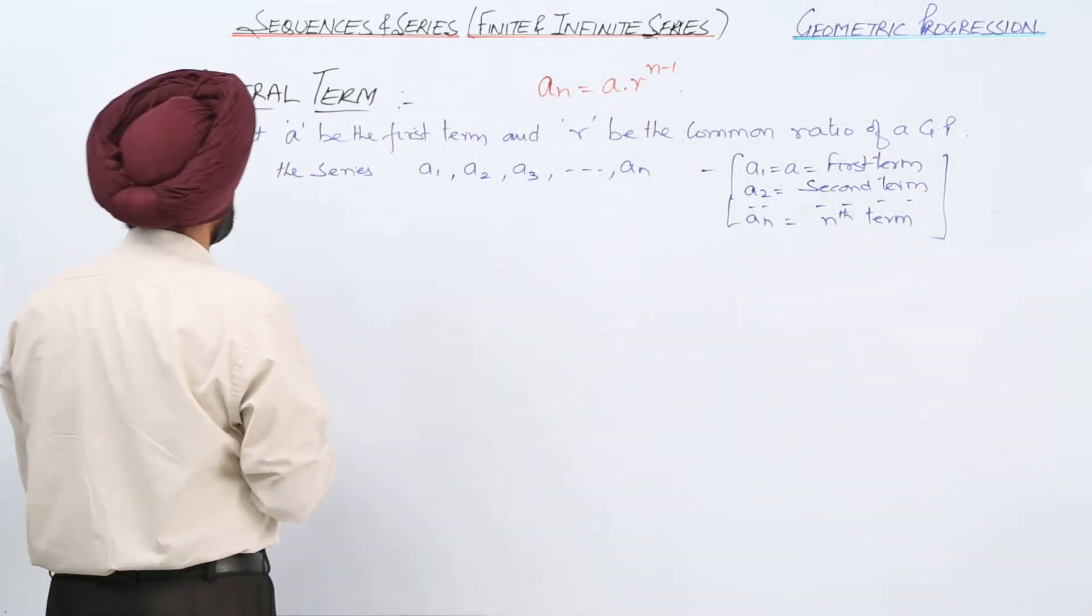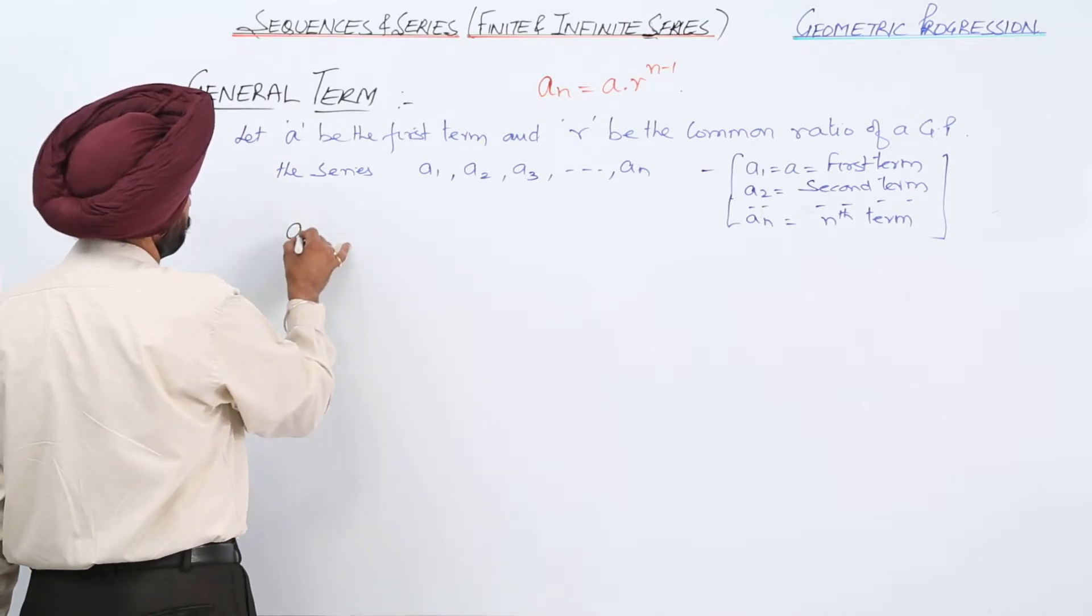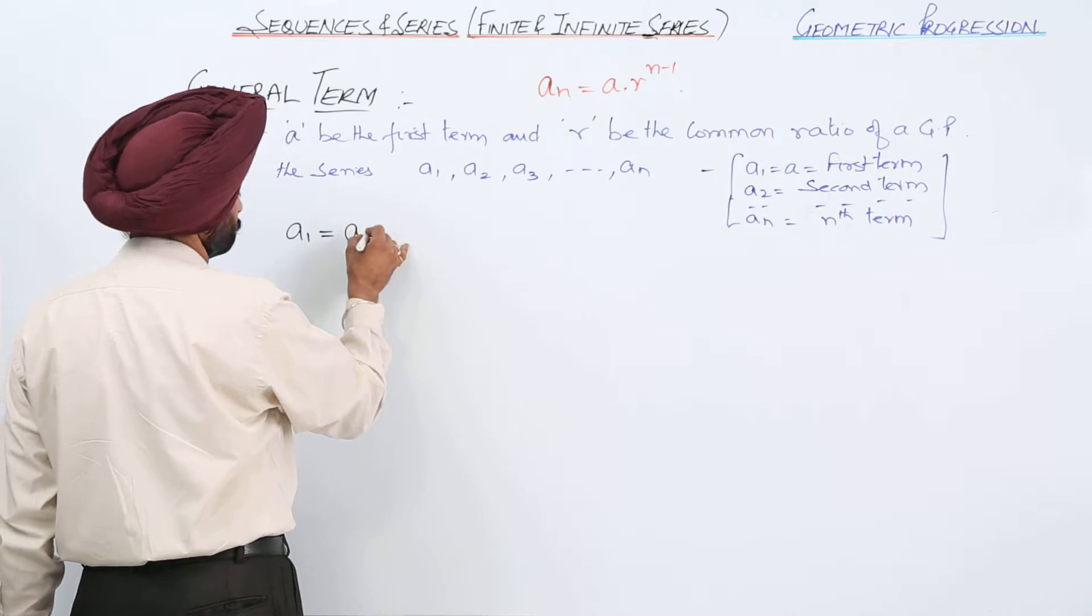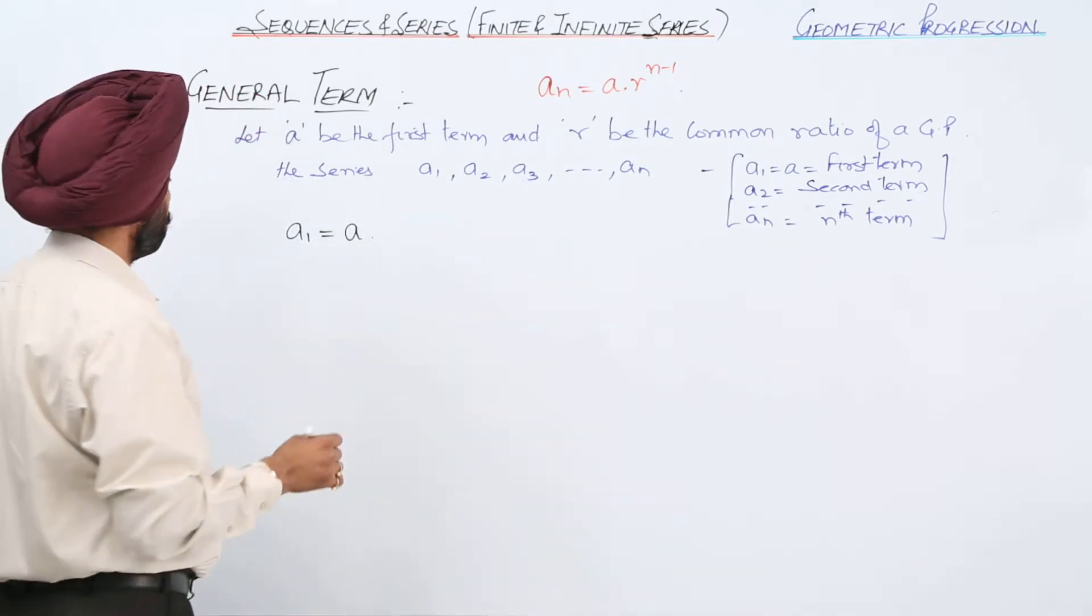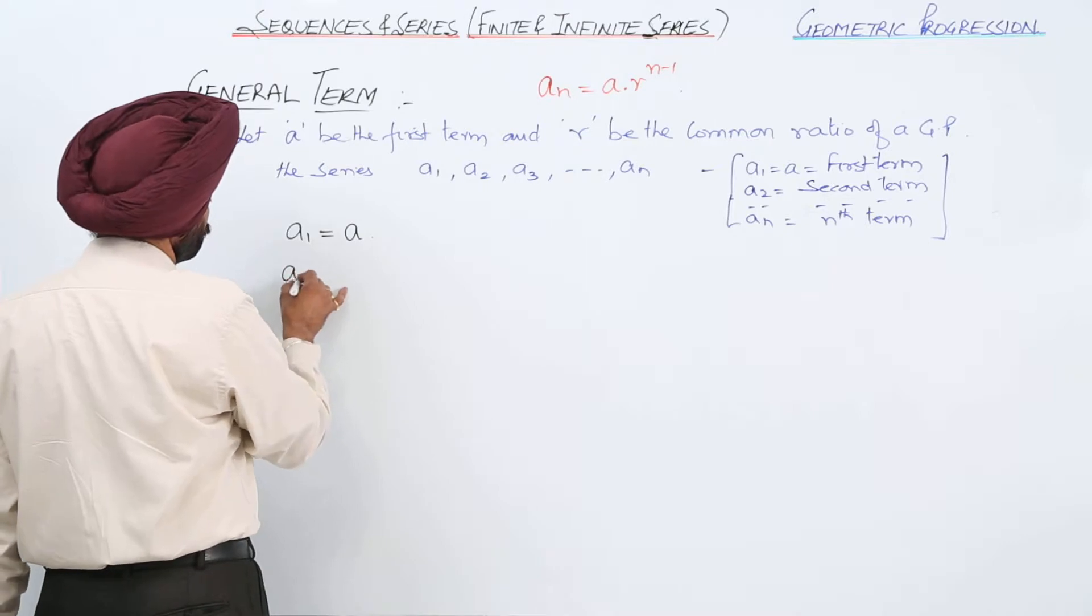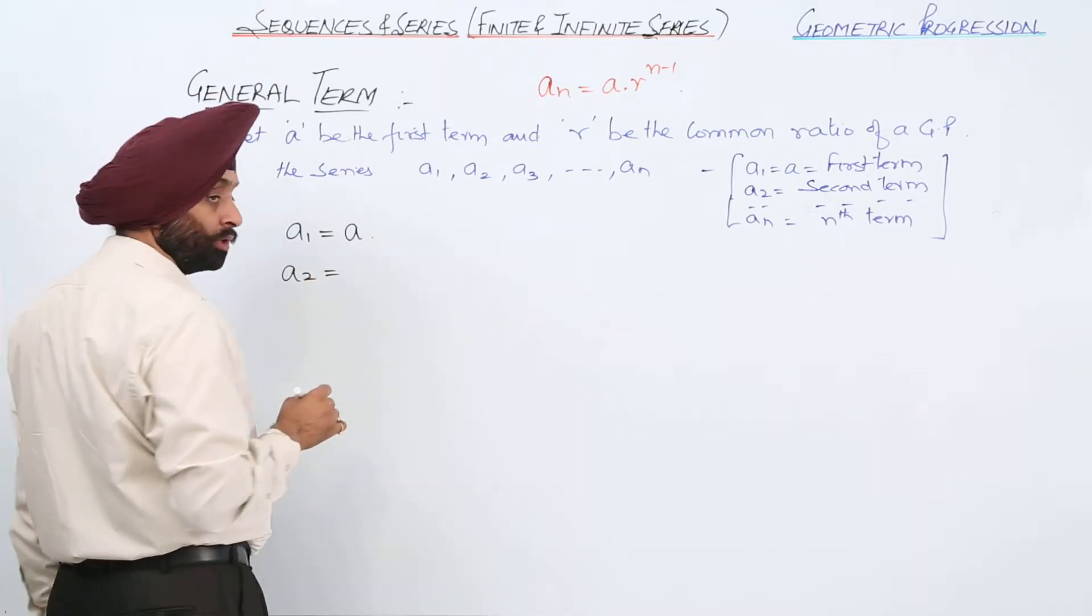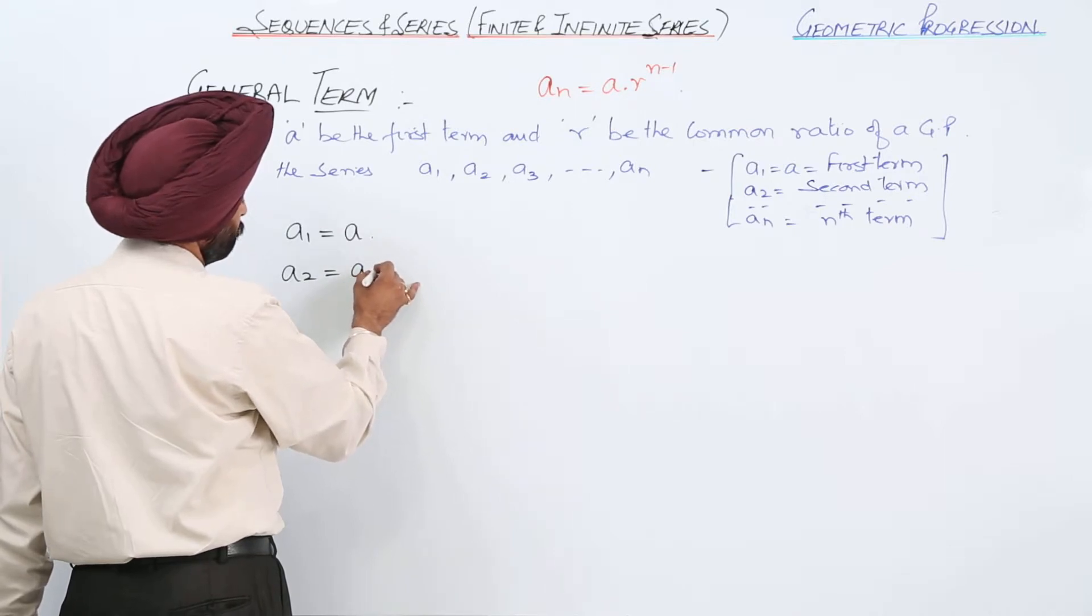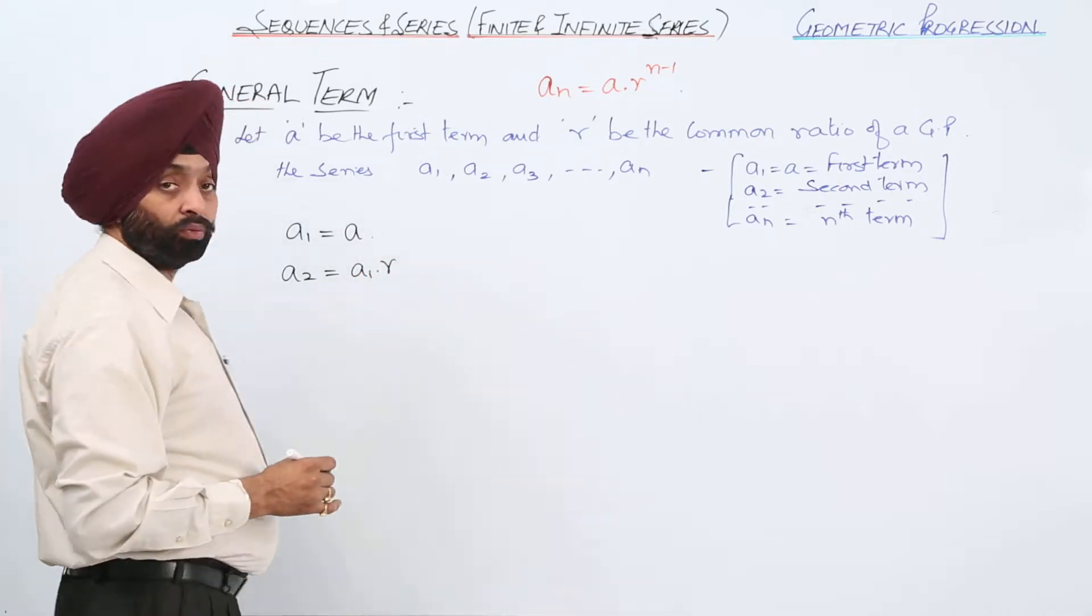Now, for the first term we have A1 equals a. This is the first term. A2, now A2 is equal to what? A2 will be A1 with r. Why A1?